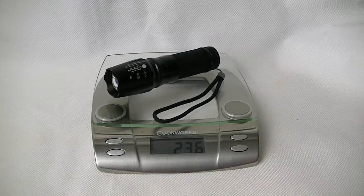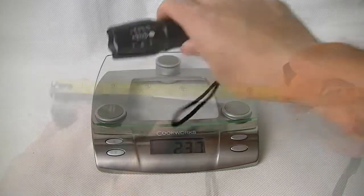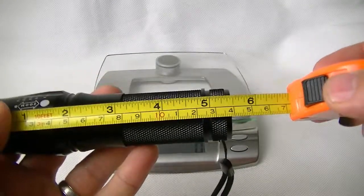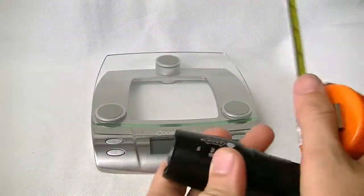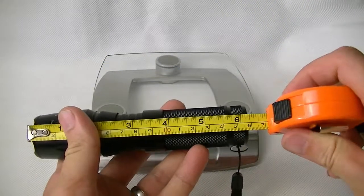Now all up, the torch with the battery included weighs 236 grams, so it's fairly bulky. In its shortest it measures five and a half inches long, and with the zoom function fully extended it's a little over six inches long. Combine that with a width of one and a half inches, and this is one fairly bulky torch.